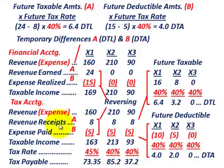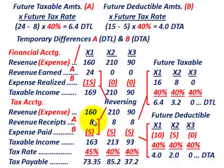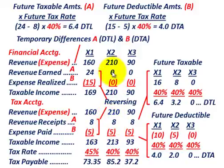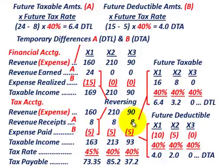For tax accounting, that same $24,000 of revenue earned is spread as revenue receipts over three years — $8,000 in each year. So for book accounting, there are no tax consequences in years X2 and X3, but for tax accounting we recognize $8,000 of revenue in each of those next two years. This is what creates the deferred tax liability.